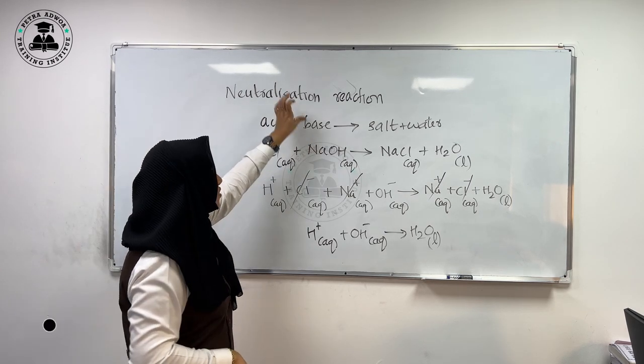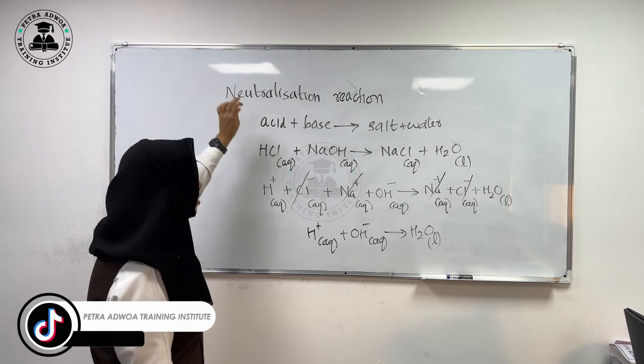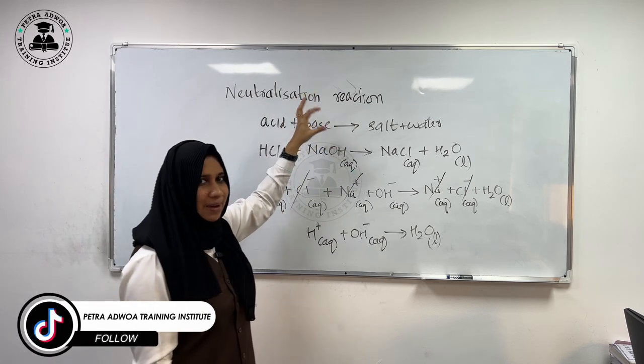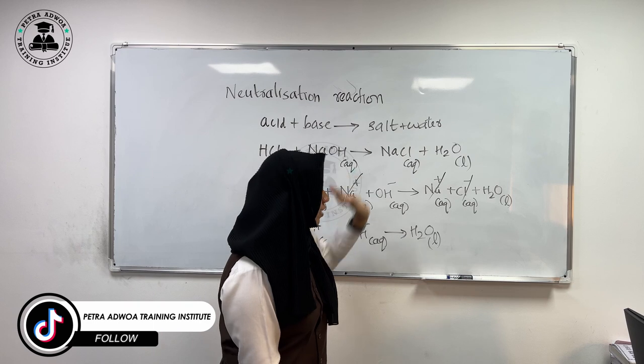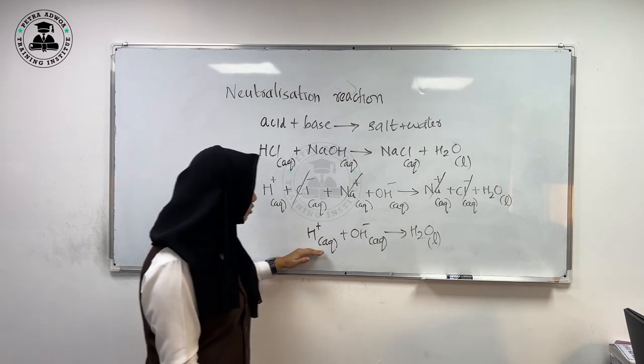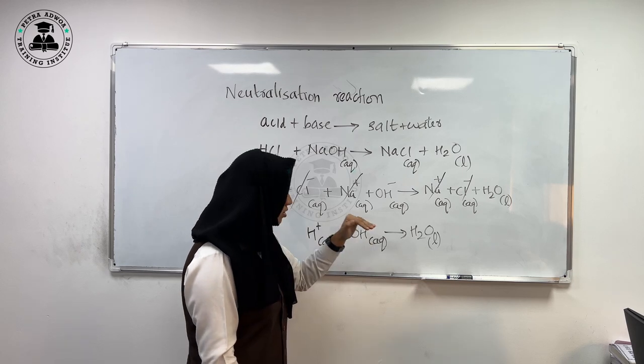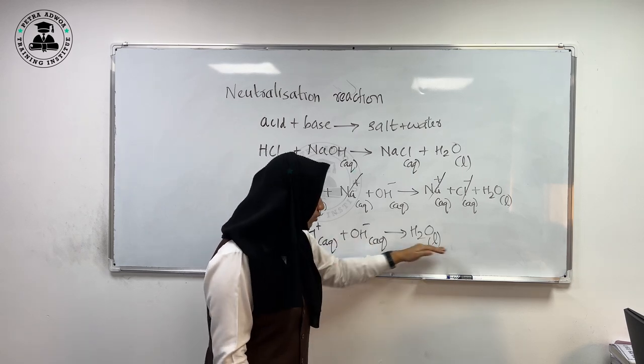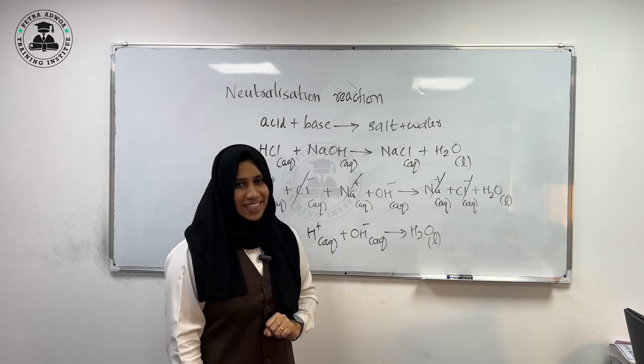So basically, a neutralization reaction is a reaction between an acid and a base. They combine together to form salt and water. And the ionic equation for neutralization reaction is H plus in aqueous state plus OH minus in aqueous state will give you H2O in liquid form. Thank you.